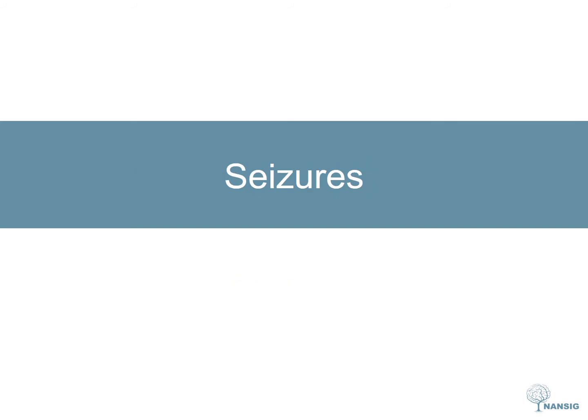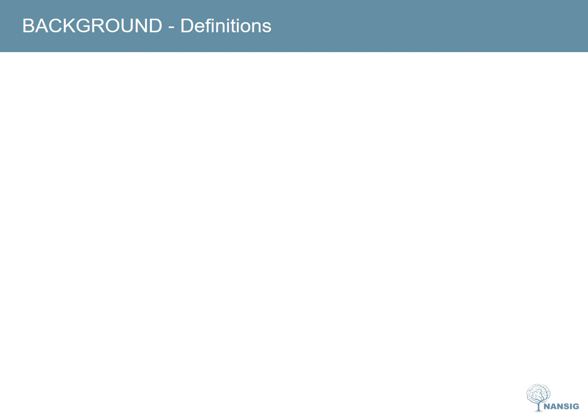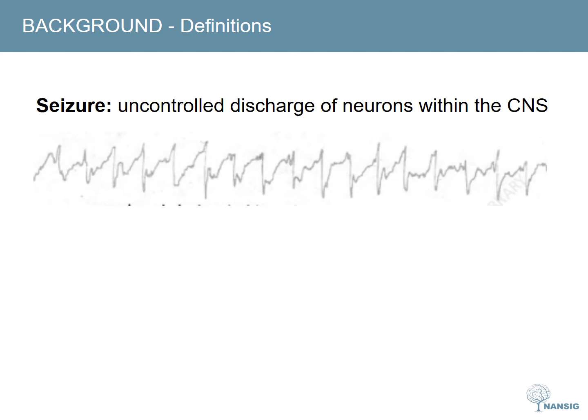So firstly let's talk about seizures. There are some key definitions that you should know to make sure that we're all on the same page. A seizure is the consequence of a paroxysmal uncontrolled discharge of neurons within the CNS. The clinical manifestation ranges from a major motor convulsion to a brief period of lack of awareness. The seizure can also be described as the ictus. The prodrome refers to the mood or behavioural changes that occur before a seizure. An aura refers to the symptom immediately before the seizure and it helps localise the point of origin of the seizure in the nervous system.